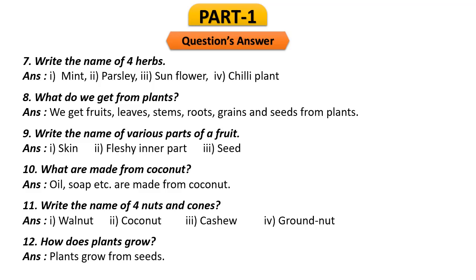Question 9: Write the name of the various parts of a fruit. The top part is the skin, the middle part that we normally eat is the fleshy inner part, and number 3 is the seed. Question 10: What are made from coconut? Oil, soap, and other products are made from coconut.